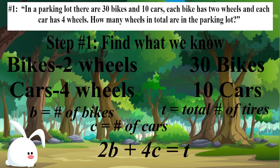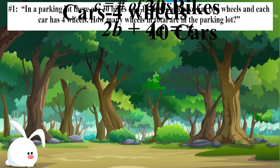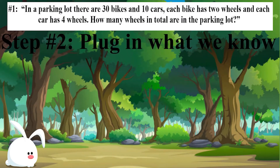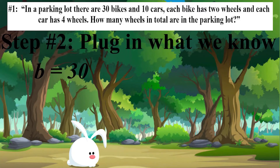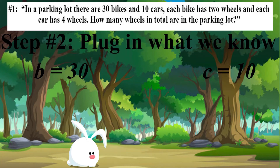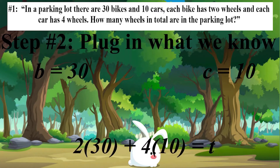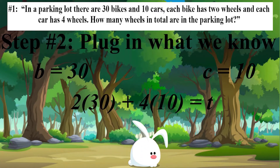Our equation will be 2b plus 4c equals t, with b being the number of bikes, c the number of cars, and t the total number of tires. Now we just plug in what we know. We know that there are 30 bikes, so b will equal 30. And we know that there are 10 cars, so c will be equal to 10. Now that we know these, we can plug them into our equation and get 2 times 30 plus 4 times 10 equals t, which is the total number of tires.